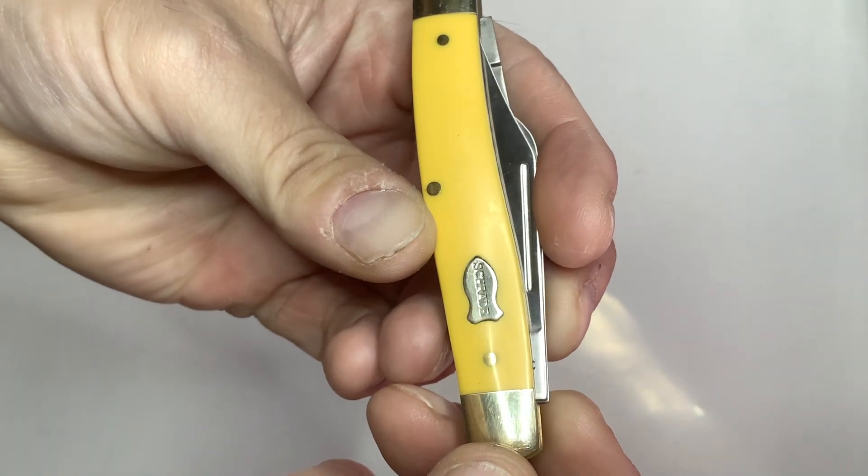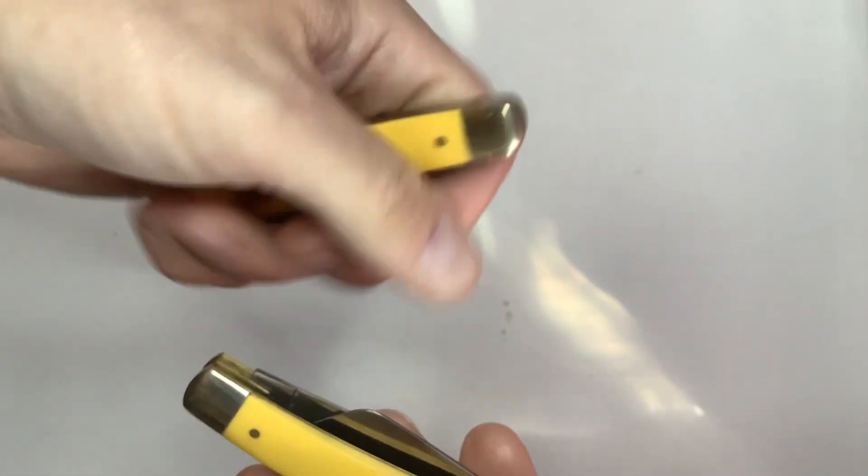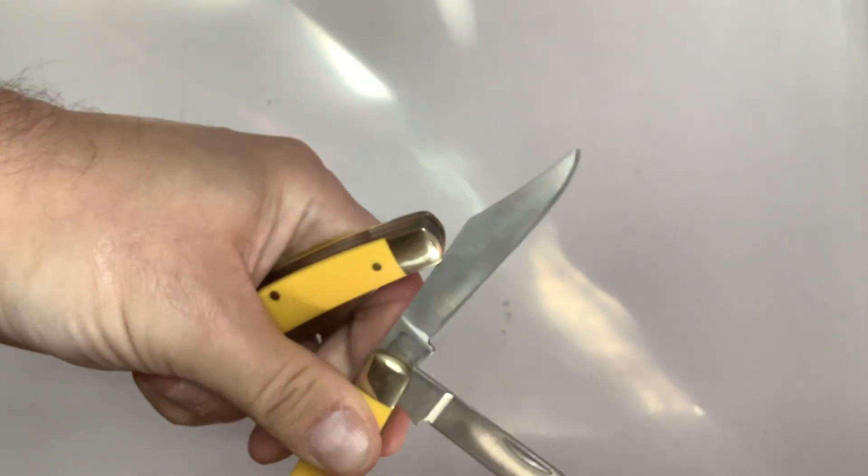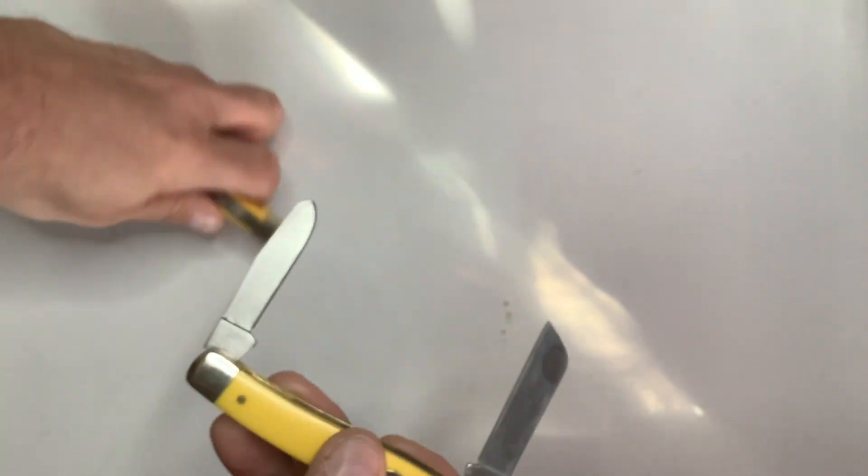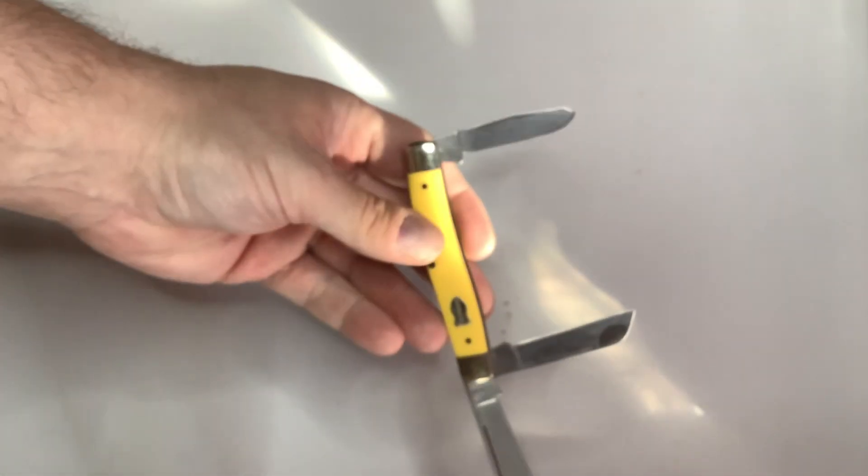Maybe it does and I didn't notice, but yeah, it's just a regular stockman. It's got the sheep's foot blade, the spade blade, and the clip point blade.